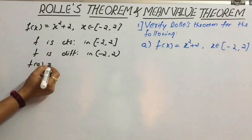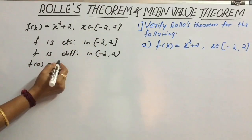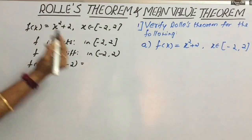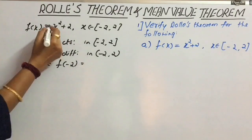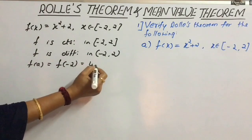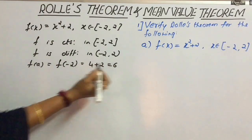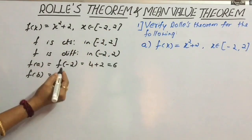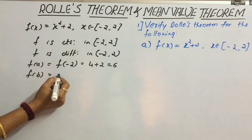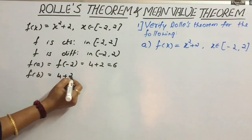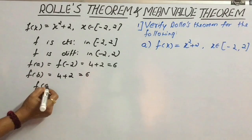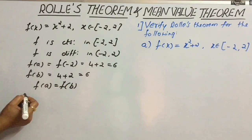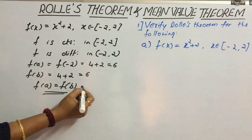Now consider f(a), where a = −2. So f(−2): replacing −2 in the given function, we get (−2)² = 4, plus 2 = 6. Consider f(b), where b = 2. Replacing 2 in the given function, we get 2² = 4, plus 2 = 6. So we can conclude that f(a) = f(b) = 6.